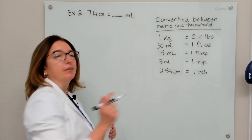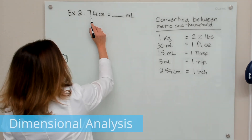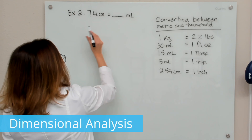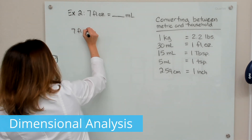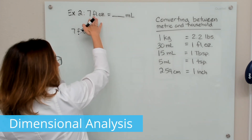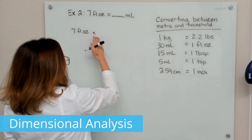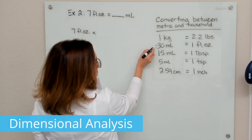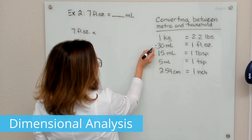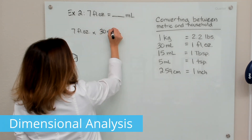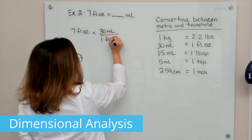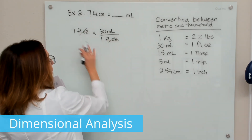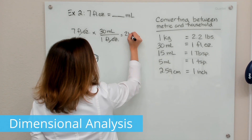Our second example problem: we want to convert seven fluid ounces into milliliters. With dimensional analysis, we write down our current unit of measure — seven fluid ounces — and multiply times the right conversion factor. We'll use 30 milliliters over one fluid ounce, so that our fluid ounces cross off. We multiply this out and end up with 210 milliliters.